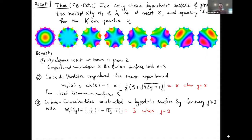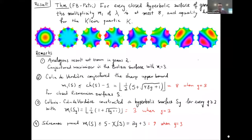To address the conjecture there are two directions: constructing examples with large multiplicity, and proving upper bounds. For the first goal, Colbois and Colin de Verdière constructed a sequence of surfaces in every genus at least three whose multiplicity of the first eigenvalue grows roughly like the square root of g, though not with exactly the same multiplicative constant. In genus three, their number comes out equal to three, so it's not quite as large as for the Klein quartic.